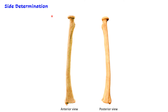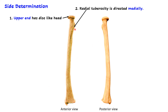How to determine the side of the radius? You have to keep three things in your mind. First is the upper end — it has a disc-like structure which is known as the head of the radius. The lower end is expanded from side to side. Second, at the upper end we also have a bony projection known as the radial tuberosity, and this should be directed medially.